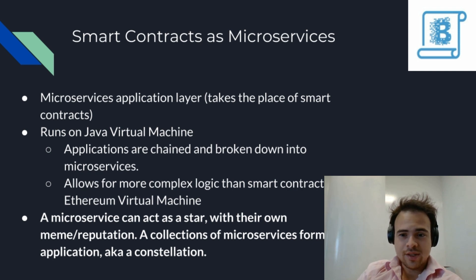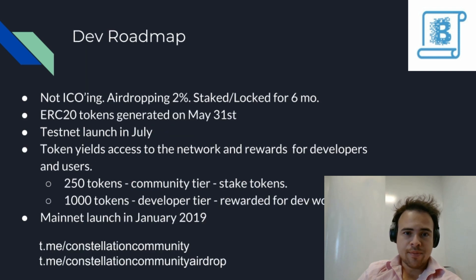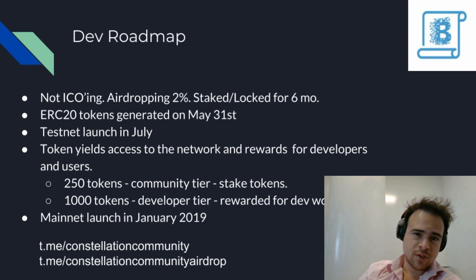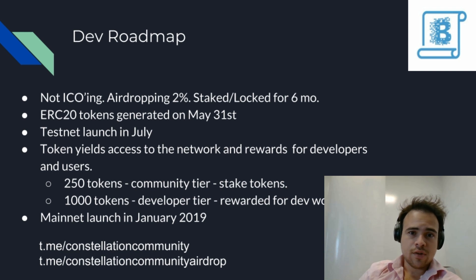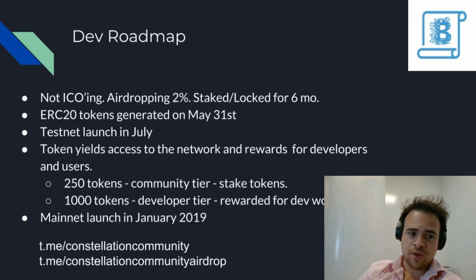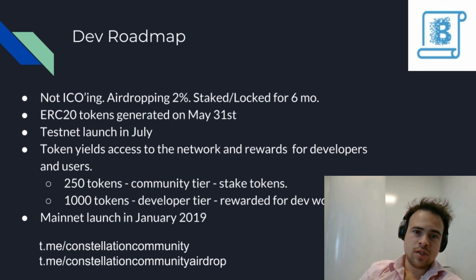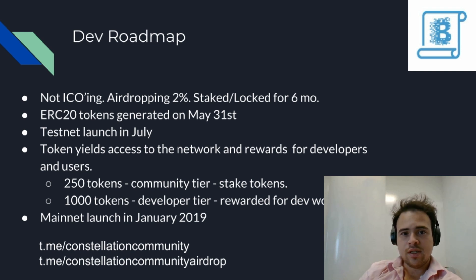On their dev roadmap, they're not doing an ICO — they're airdropping two percent, staked and locked for six months. Anyone can sign up, though not U.S. citizens unfortunately. The ERC-20 tokens are generated on May 31st, the testnet goes live in July, and the tokens are a utility token giving access to the platform and acting as rewards for developers and users. 250 tokens give you the community tier, enabling you to stake your tokens to earn more. 1,000 tokens is needed for the developer tier, which gives access to the developer community, the developer portal, and more rewards for dev work. The mainnet launch is in January 2019.